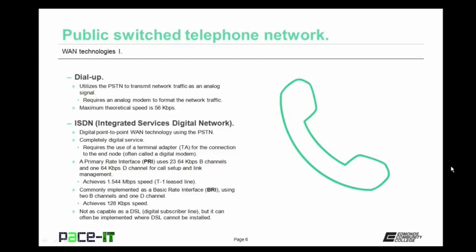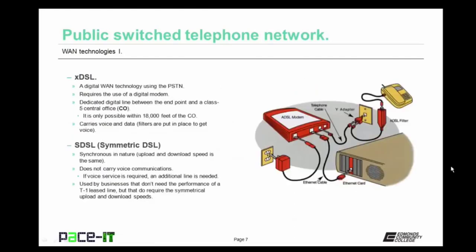The most commonly implemented form of ISDN is the BRI — the Basic Rate Interface. It uses only two B channels and one D channel, and the BRI can achieve speeds of up to 128 kilobits per second. ISDN is not as capable as a Digital Subscriber Line, or DSL, but it can often be implemented where DSL cannot be installed. Speaking about DSL, let's move on. XDSL is the term for Generic DSL. DSL is a digital WAN technology that utilizes the PSTN and does require the use of a digital modem.